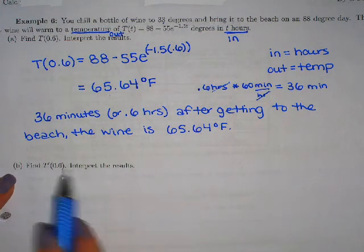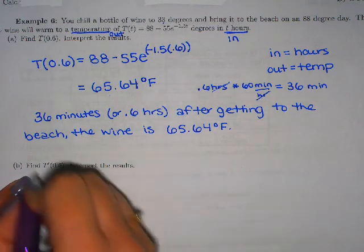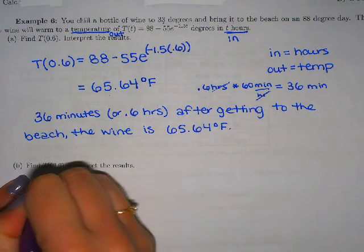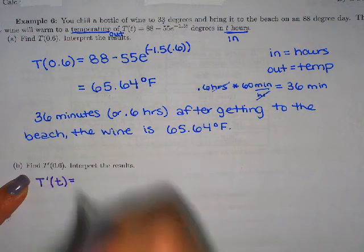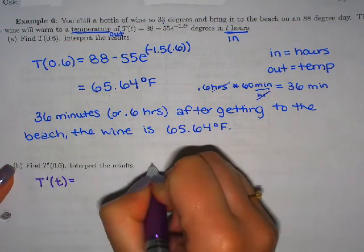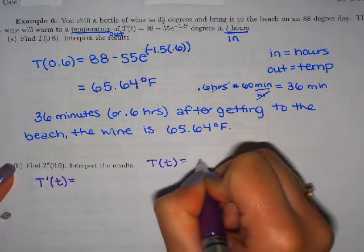The next part says find t prime of 0.6 and interpret your results. So t prime tells me I need to take the derivative. So first I'm just going to take the derivative with respect to time. Well one thing I might note.